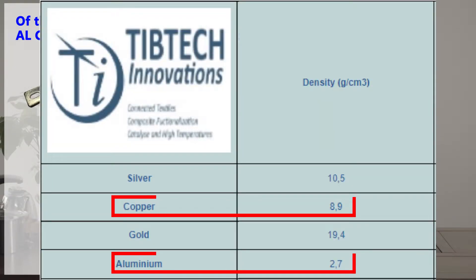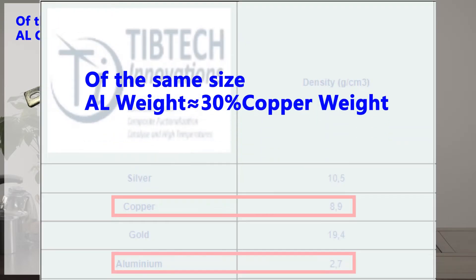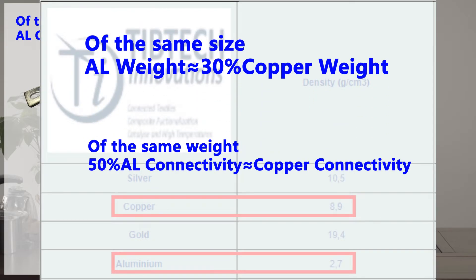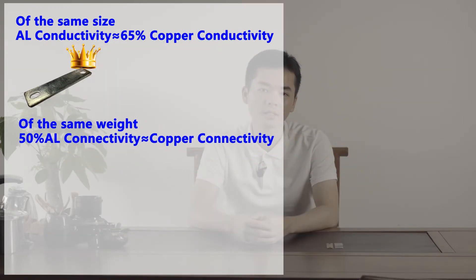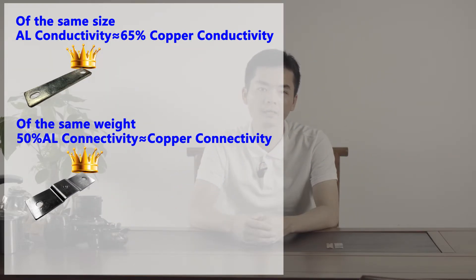On the other hand, aluminum material is 70% lighter than copper material. So when you compare conductivity by weight, you will find that aluminum material is actually 50% more conductive than copper material. So in this case, aluminum material gets the upper hand. The second point is price and cost.